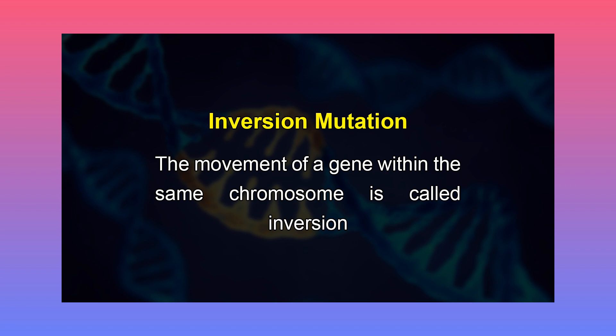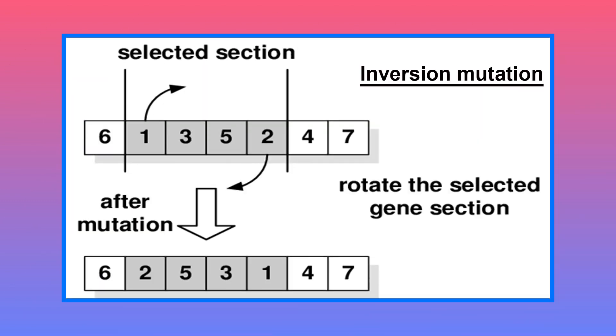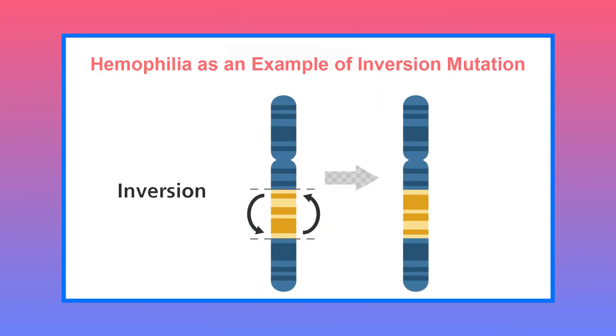The movement of a gene within the same chromosome is called inversion. Inversions are a special type of mutation in which a piece of chromosomal DNA is flipped 180 degrees. For an inversion to occur, two breaks occur in a chromosome. The region between the breaks gets inverted and the ends of the region get rejoined to the rest of the chromosome. A well-known example of an inversion mutation in humans is hemophilia, a disease that inhibits the ability of blood to clot.